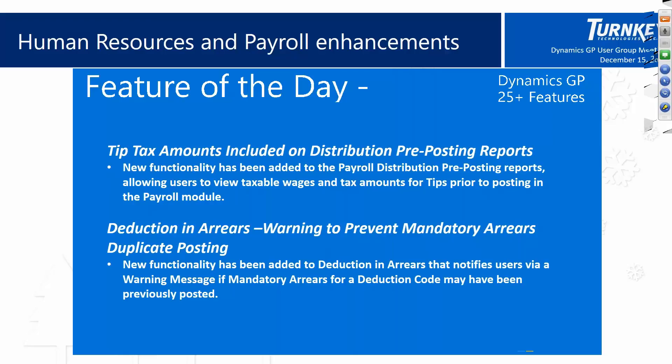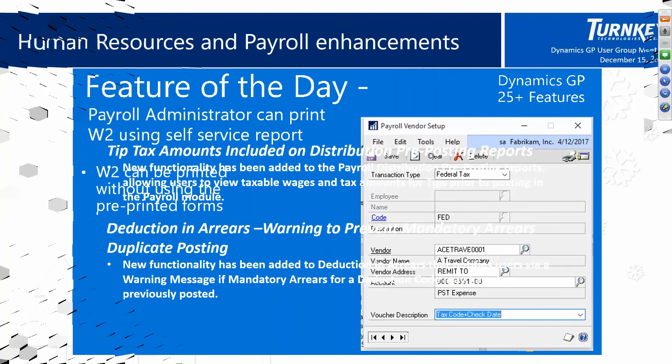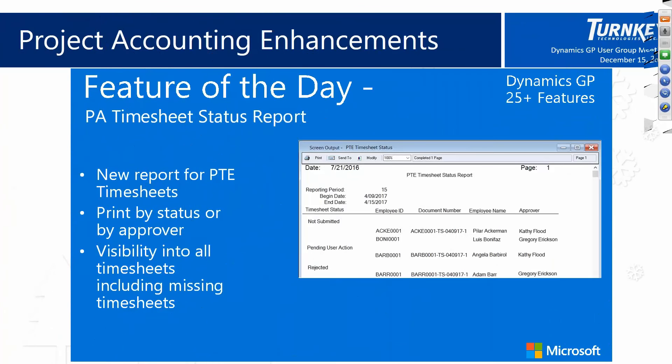There's also a warning to prevent duplicate posting of deductions — it will warn you so that you don't end up posting a deduction code that has already previously been posted. Additionally, there is now a timesheet status report you can run on the project accounting side. It gives you the status of specific employees who have timesheets not yet submitted, pending user action, or rejected. You can run it by status or by approver to find out where timesheets are sitting and who has yet to approve them.